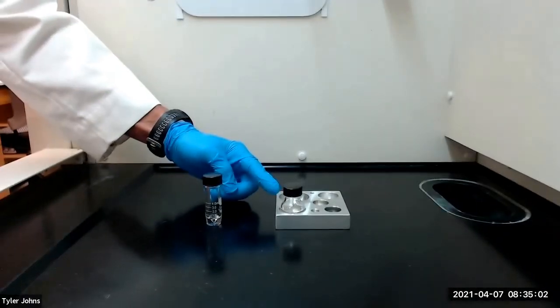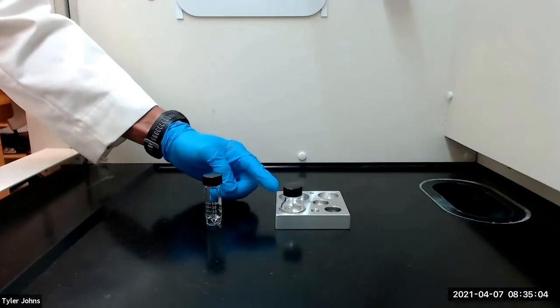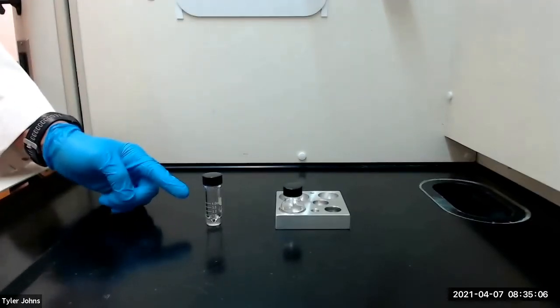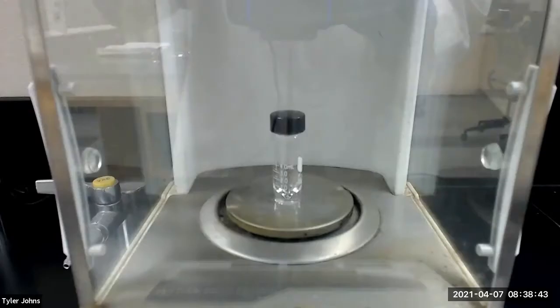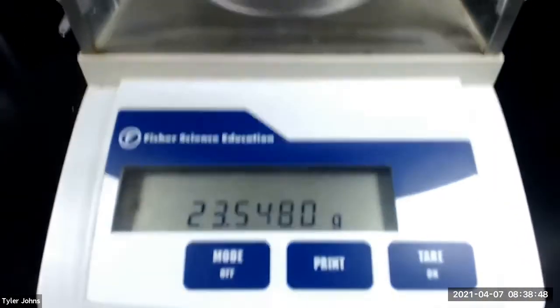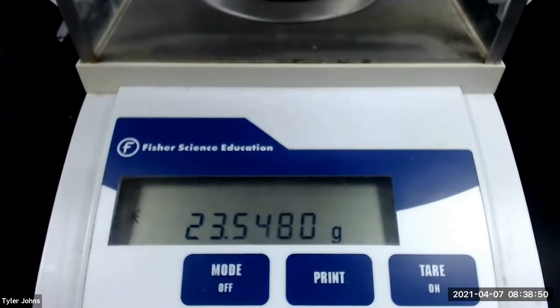After transferring the crude ester to the 10 milliliter round bottom flask, we next need to pre-weigh a 5 milliliter conical vial, which we will be using to collect the final product. The mass of the pre-weighed 5 milliliter conical vial is 23.5480 grams.